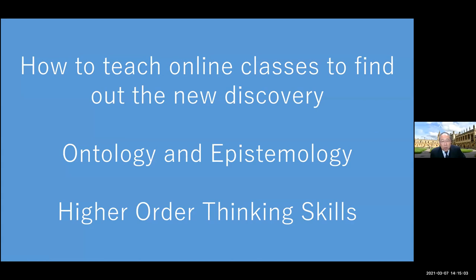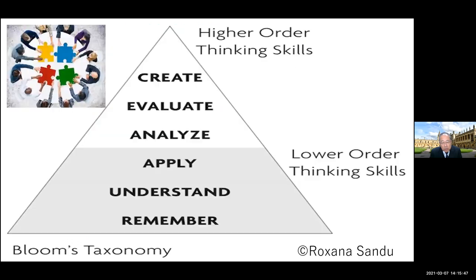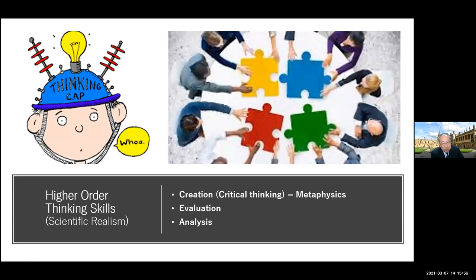How to teach online classes to find new discoveries? Whenever we find a new discovery, ontology and epistemology — those two keywords are very important. Ontology is things that exist independently; epistemology is how we become aware of what's going on around us. And then how are we going to train students in higher-order thinking skills? I brought up Bloom's digital taxonomy. In Japan we seem to focus on the lower levels of thinking — levels one to three. However, at the university level, to find out something new, we have to really focus on levels four to six: analysis, evaluation, and creation. Metaphysics is very important when we refer to critical thinking.